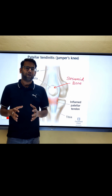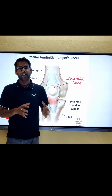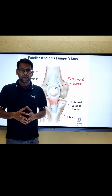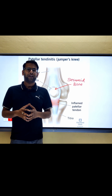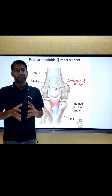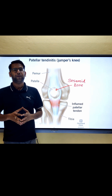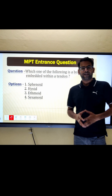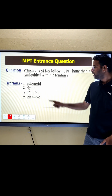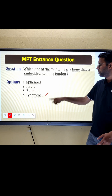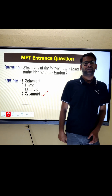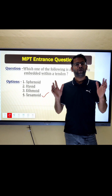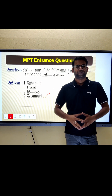Its main functions are to protect the tendon from stress and to increase mechanical efficiency by improving leverage. The correct answer is option four: sesamoid bone. For more such videos, follow Times Physio.